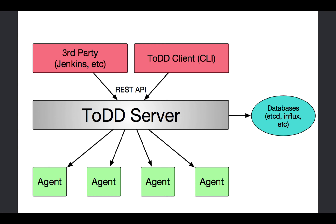Now let's talk about the high-level design of TODD. It's fairly straightforward and composed of three components: a server in the middle, agents scattered on the bottom, and a client as well as any third-party utilities integrating with TODD at the top. The server is the component that maintains communication with any outside databases. The agents communicate directly to the server only. Any third-party interactions — such as those with databases — are built in a reasonably modular way. I wrote integrations for etcd and InfluxDB, but did so in a way that doesn't lock you into my choices.